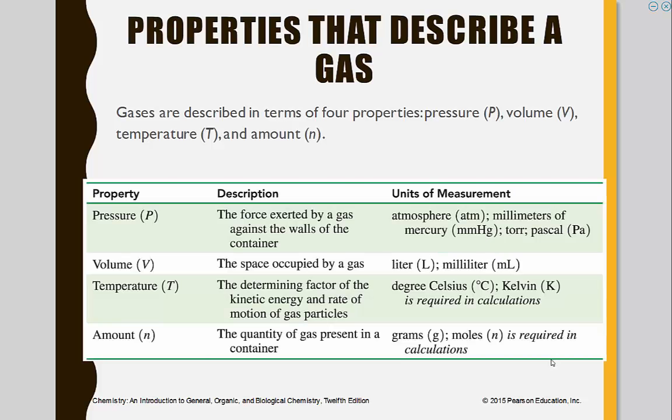Alright, so we can actually look at four different variables when it comes to looking at gases. We have pressure, volume, temperature, and N is the abbreviation for the amount or the moles of a substance. So we're talking about the amount of a gas.